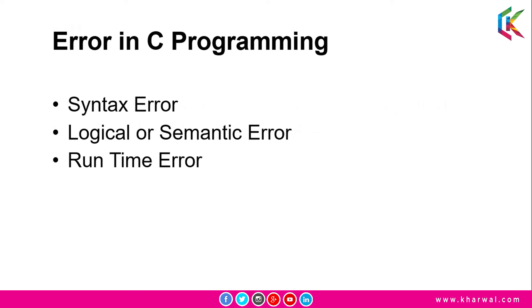Now, errors in C programming. There are three types of errors in C programming: the first one is syntax error, the second one is logical or semantic error, and the last one is runtime error.